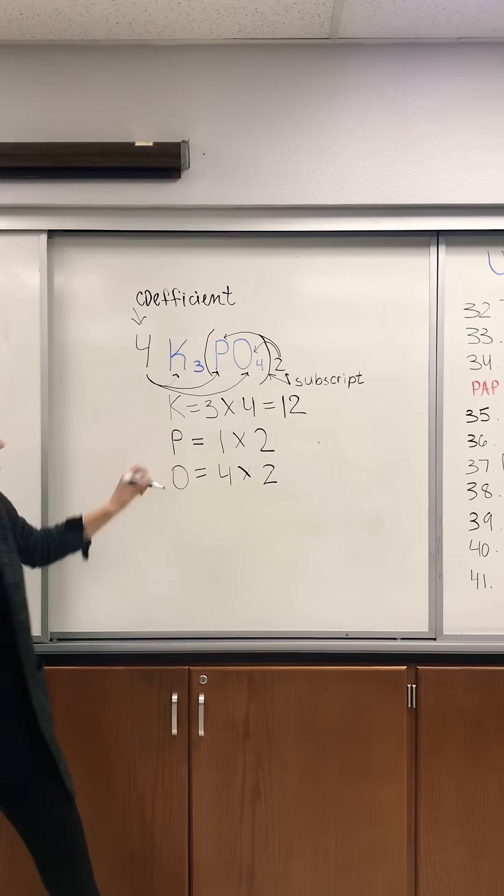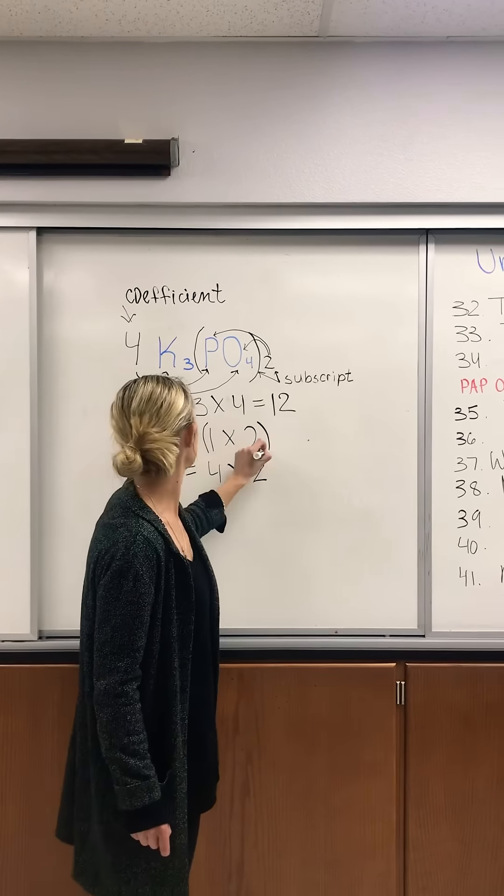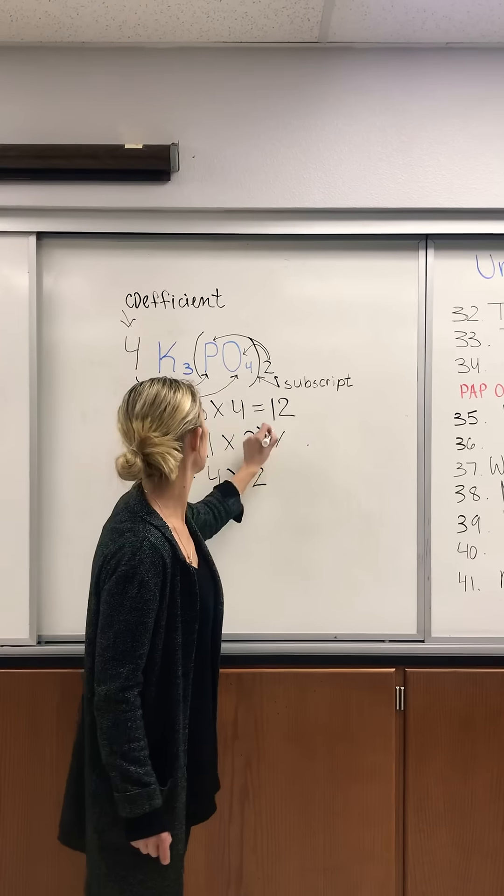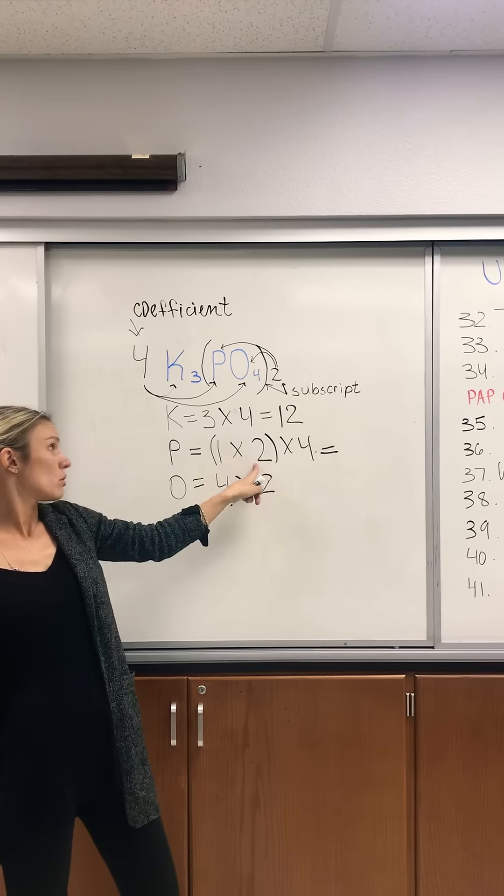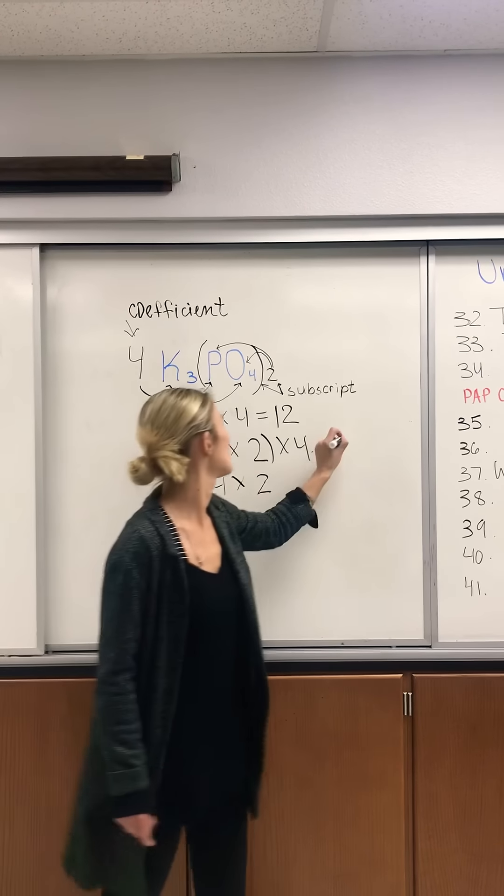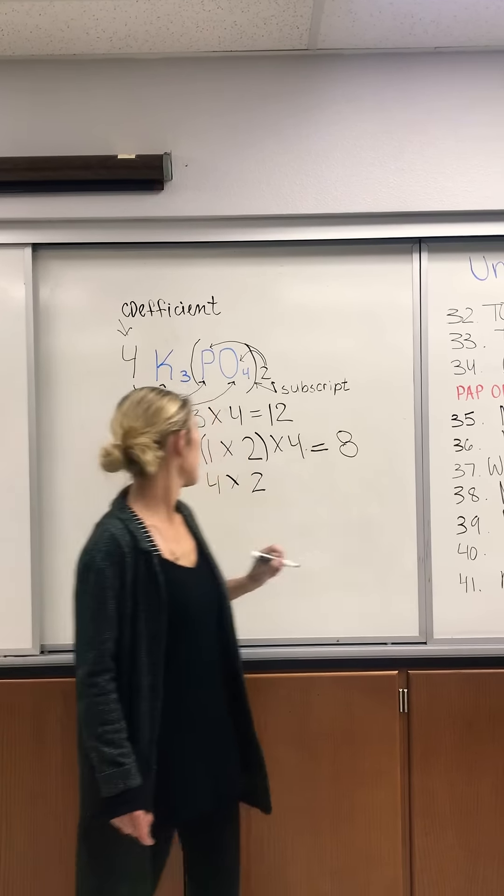Now my next one, P. P was in parentheses, so I have to multiply by four. One times two is two. Two times four is eight.